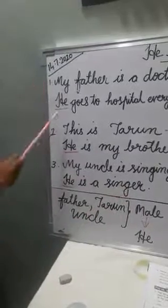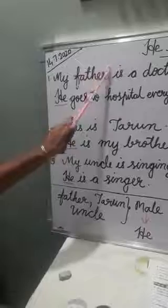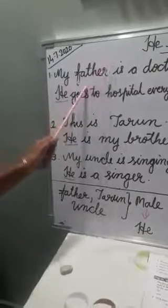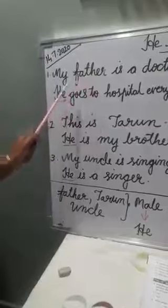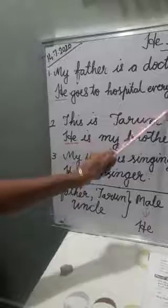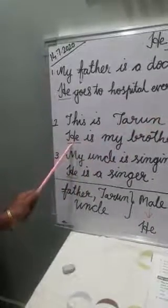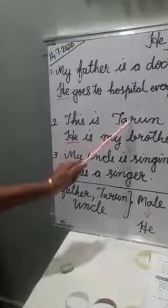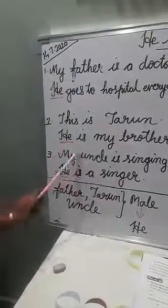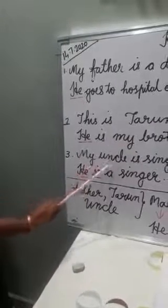Children, in these sentences 'he' is used instead of 'father'. You all know father is a naming word. So this 'he' is used instead of a naming word. Here, 'This is Tarun' — Tarun is also a naming word and 'he' is used in place of Tarun. Then here, 'Uncle' — 'he' is used in place of Uncle.